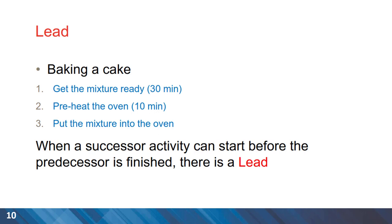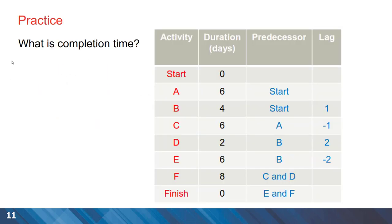And we can have another example, a practice example in here. The negative values are lead and we have them for two activities and we have positive values of lag for other two activities. And we are after the completion time of the project. The final answer here is 19 days.